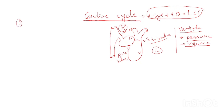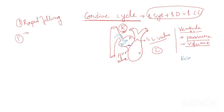The first event we will discuss is rapid filling. In this event, we see the pressure changes. The AV valve is now closed as blood comes from the vena cava and pours into the right atrium. The pressure in the atria will increase. When the chamber is in relaxation phase, then only there is filling — this we have to remember.